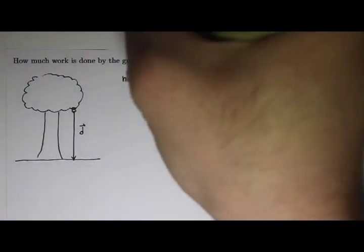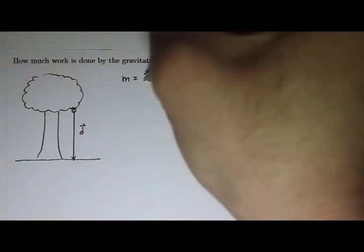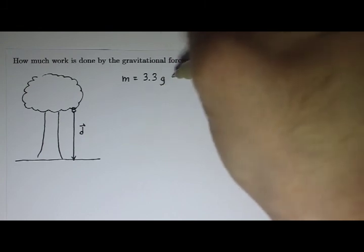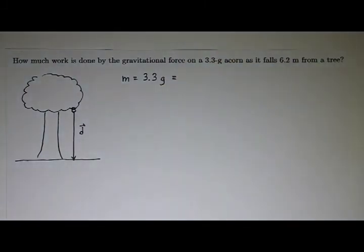Okay, and let's see, we have the mass of the acorn, that's 3.3 grams. I'd better convert that to kilograms to keep the units consistent here. So remember, to convert to kilograms, you move the decimal place three times.